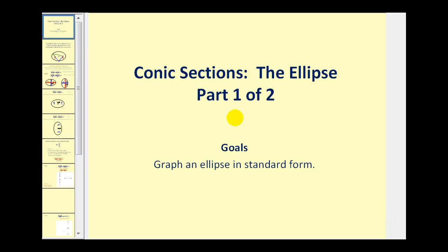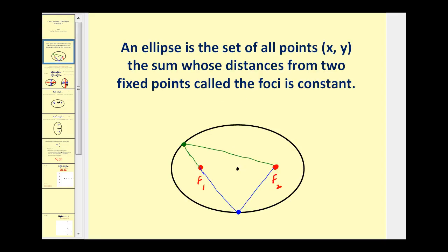Welcome to the first of two videos that will focus on the ellipse. The goal of this video is to graph an ellipse in standard form. An ellipse is a set of all points x, y, the sum of whose distances from two fixed points, called the foci, is constant.